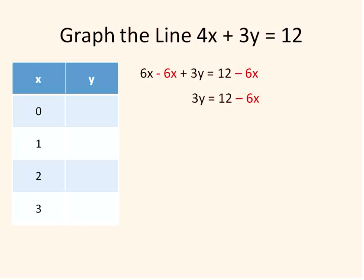To get y by itself, you subtract 6x from both sides of the equation. Subtracting 6x from both sides leaves us with 3y equals 12 minus 6x. We usually write that as negative 6x plus 12. To further get y completely by itself, we divide both sides by 3. 3y divided by 3 gives us y. Negative 6x divided by 3 gives us negative 2x, and 12 divided by 3 gives us 4.